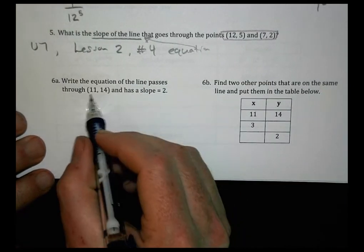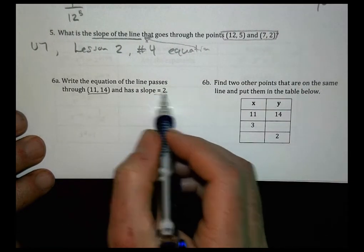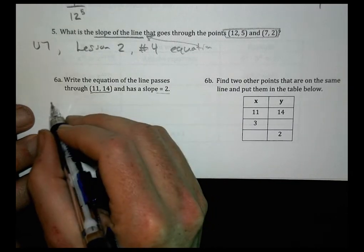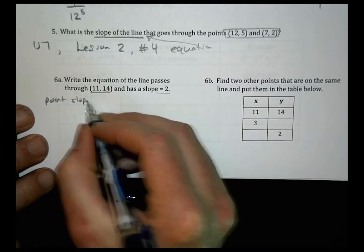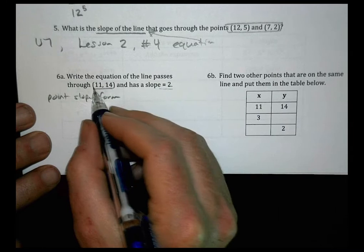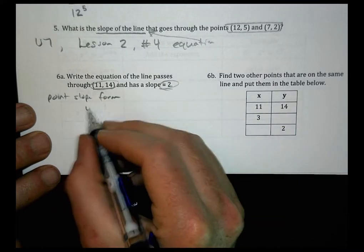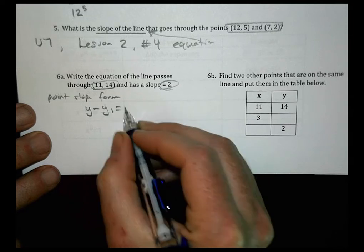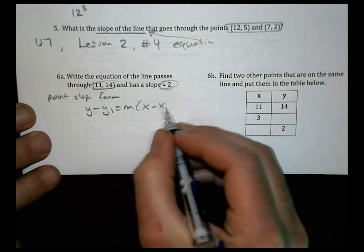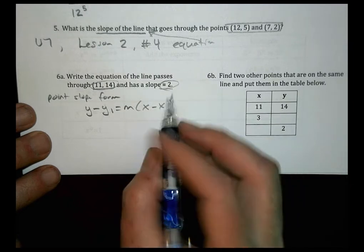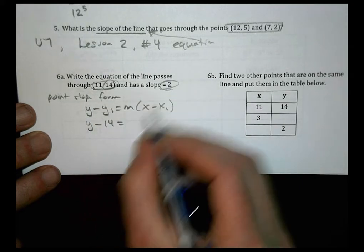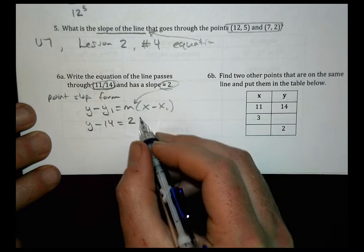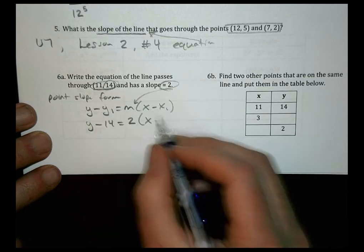Looking at number 6. Write the equation of a line that passes through (11, 14) and has a slope of 2. To do that, we use the point-slope form, because we're given a point and we're given a slope. Point-slope form is what? Y minus Y1 equals the slope times X minus X1. We have some values here. We have a Y1, that's our Y1. Y minus 14 equals the slope of 2 times X minus X1, which is 11.